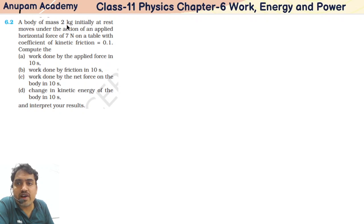The question is: a body of mass 2 kg, initially at rest, moves under the action of an applied horizontal force of 7 Newton on a table with coefficient of friction 0.1.